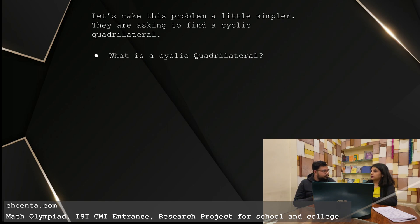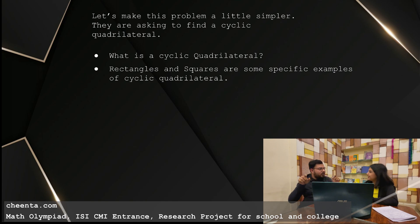There are some specific type of quadrilaterals which are always cyclic. Can you think of an example? A rectangle. All the four vertices, all the angles are 90 degrees. So if I just take two opposite angles and if I sum it up, it will be 180, so as a square.